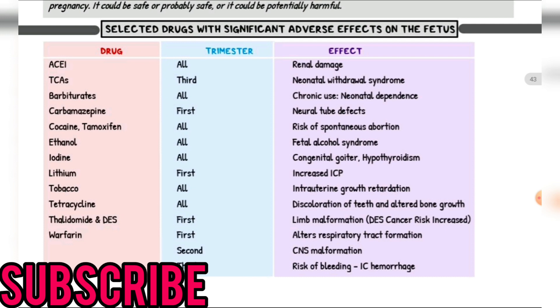Next is warfarin: all three trimesters. In the first trimester, alters respiratory tract formation. Second trimester: CNS malformation. Third trimester: risk of bleeding and intracranial hemorrhage.